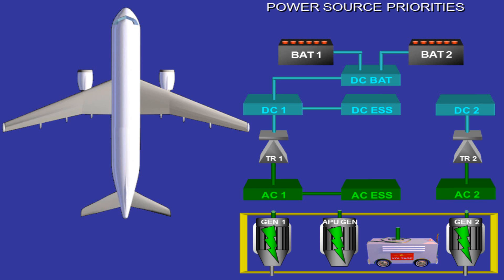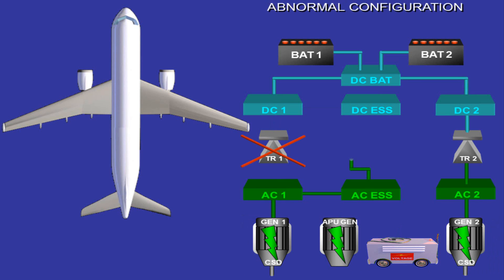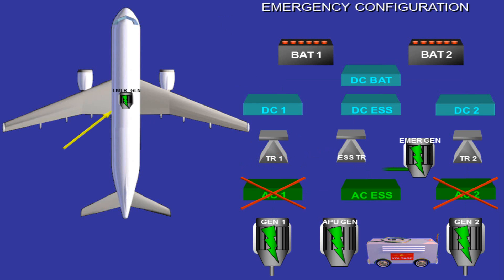The electrical system is also fitted with an essential transformer rectifier, essential TR, which supplies the DC essential bus in abnormal or emergency configuration. In abnormal configuration — loss of TR1 or TR2 — the essential TR is supplied by the AC essential bus. The hydraulic power to drive the emergency generator is provided by a ram air turbine, RAT, via the blue hydraulic system.